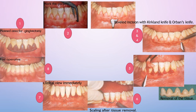Summary of gingivectomy steps: first, plan the area; then mark the pockets with the Crane-Kaplan pocket marker; create a beveled incision at 45 degrees with the Kirkland knife on facial and lingual surfaces, and the Orban's knife for interdental incisions; use tissue forceps to remove the excised tissue; scale and root plane the now-exposed root surface; and review the clinical and post-operative views.